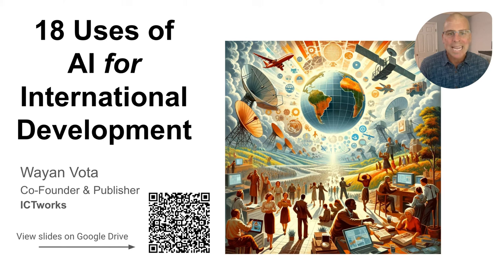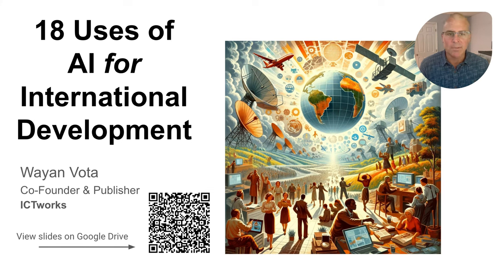I'd like to show you 18 ways we are using artificial intelligence to improve outcomes in international development today. These are real examples, not just ideas or concepts, but practical AI solutions for health, education, agriculture, economic development, and more.